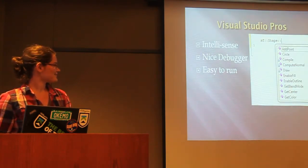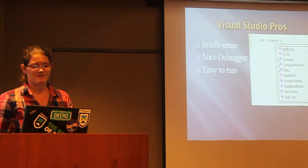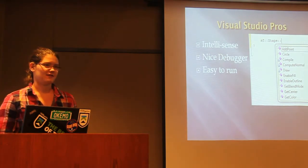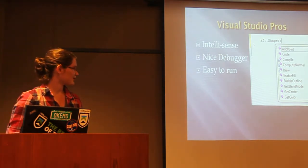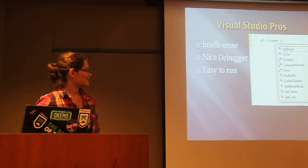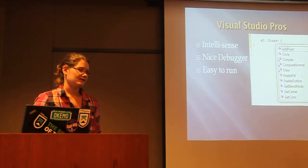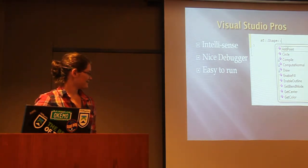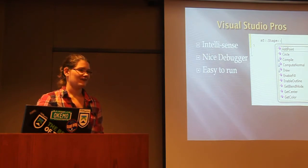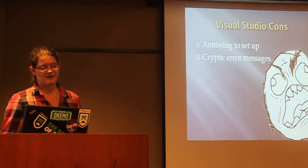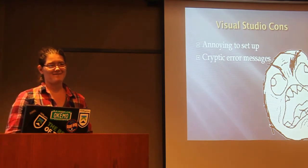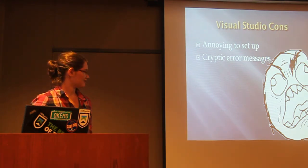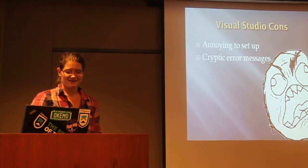The pros of Visual Studio are that it has IntelliSense, which is really nice when programming — you type in a double colon and it comes up with a list of things you can do with an object. I really like the debugger and use it often because my logic isn't always pristine, and it's very easy to run and compile once set up. The cons are it's a pain to set up, there's a lot of stuff in the property sheet, and linker errors are horrible — you get really cryptic error messages sometimes.